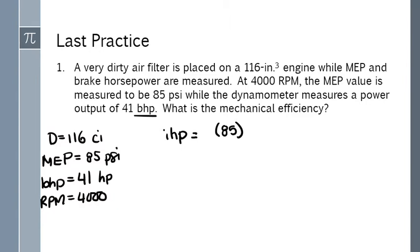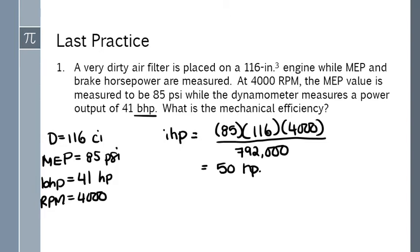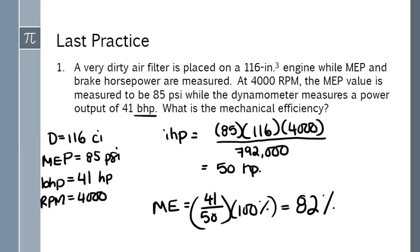So the first thing we're going to do is find the indicated horsepower. 85 for the MEP, 116 for the displacement, 4,000 for the engine speed. So the second thing we're going to do is find the mechanical efficiency. Brake horsepower divided by indicated horsepower, 41 divided by 50 times 100 percent equals 82 percent, that's mechanical efficiency of this setup.